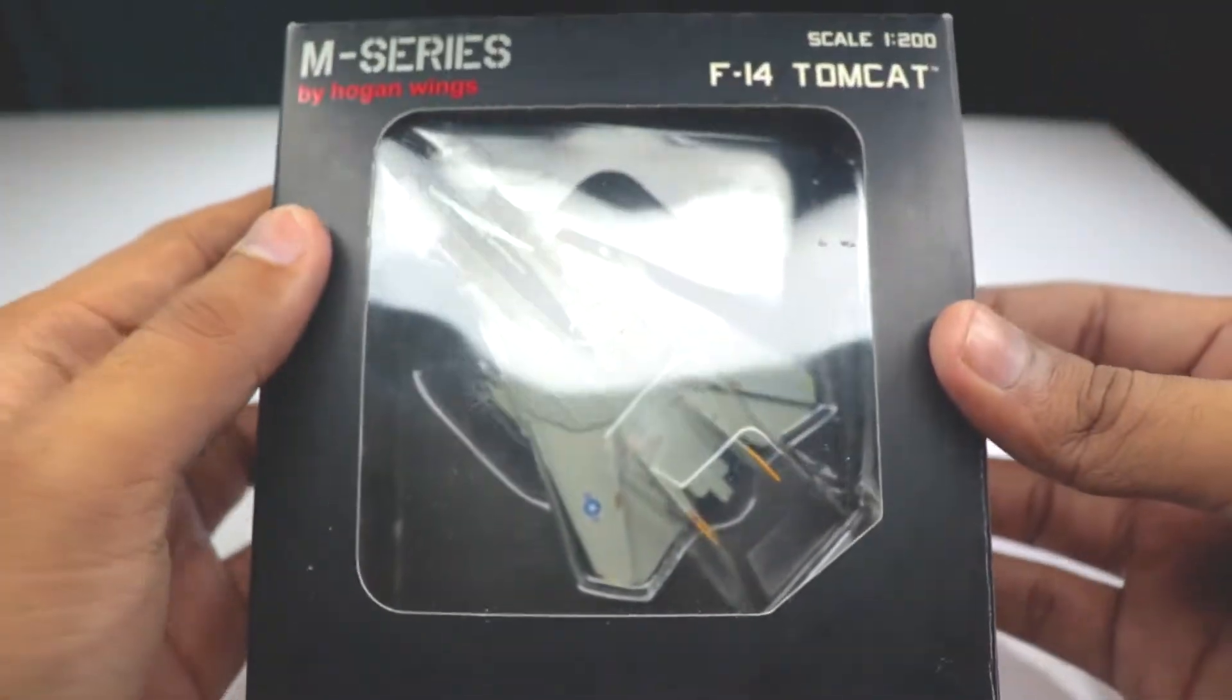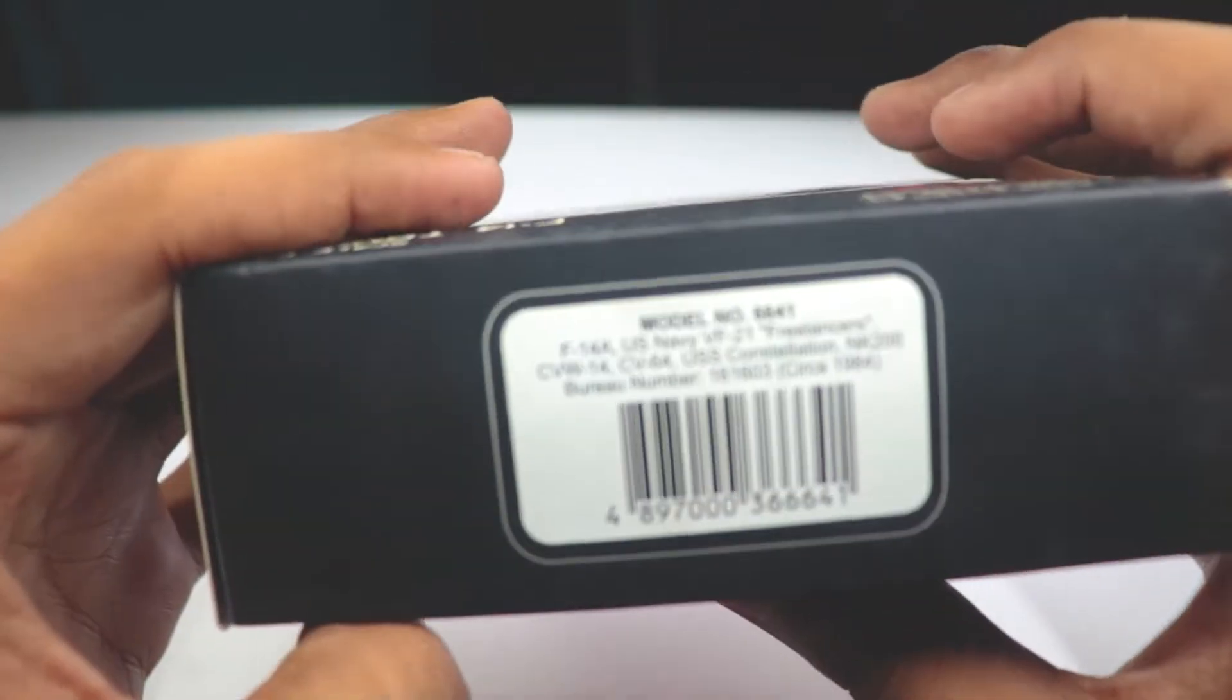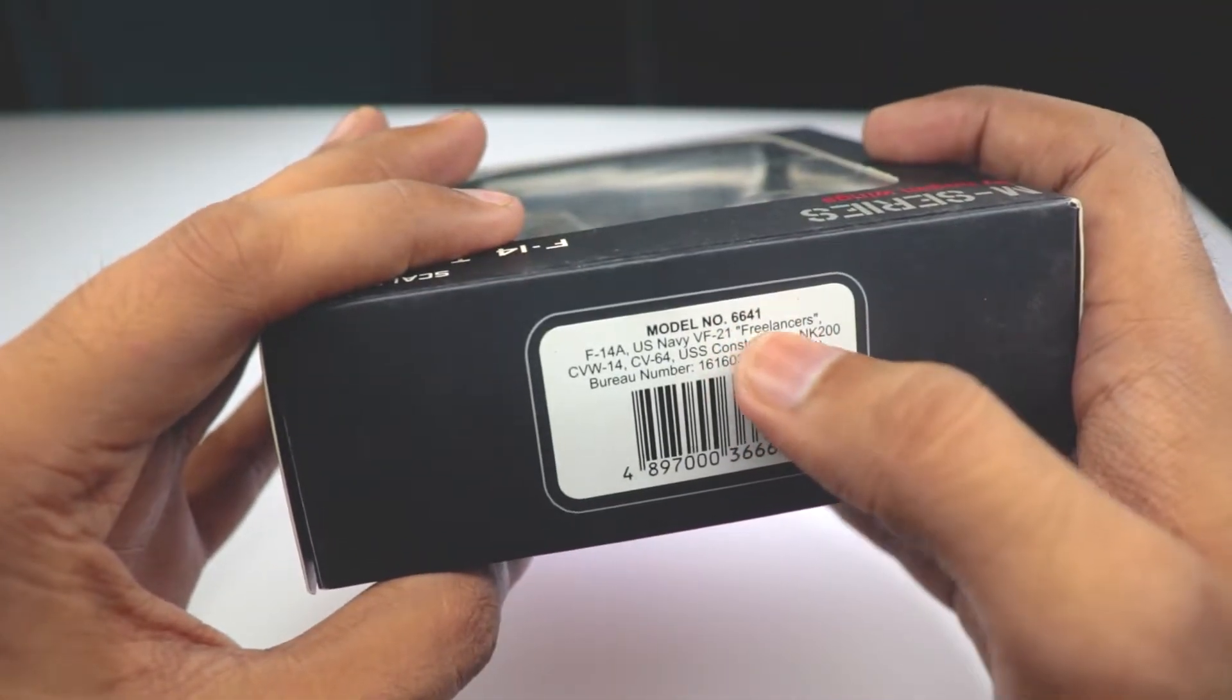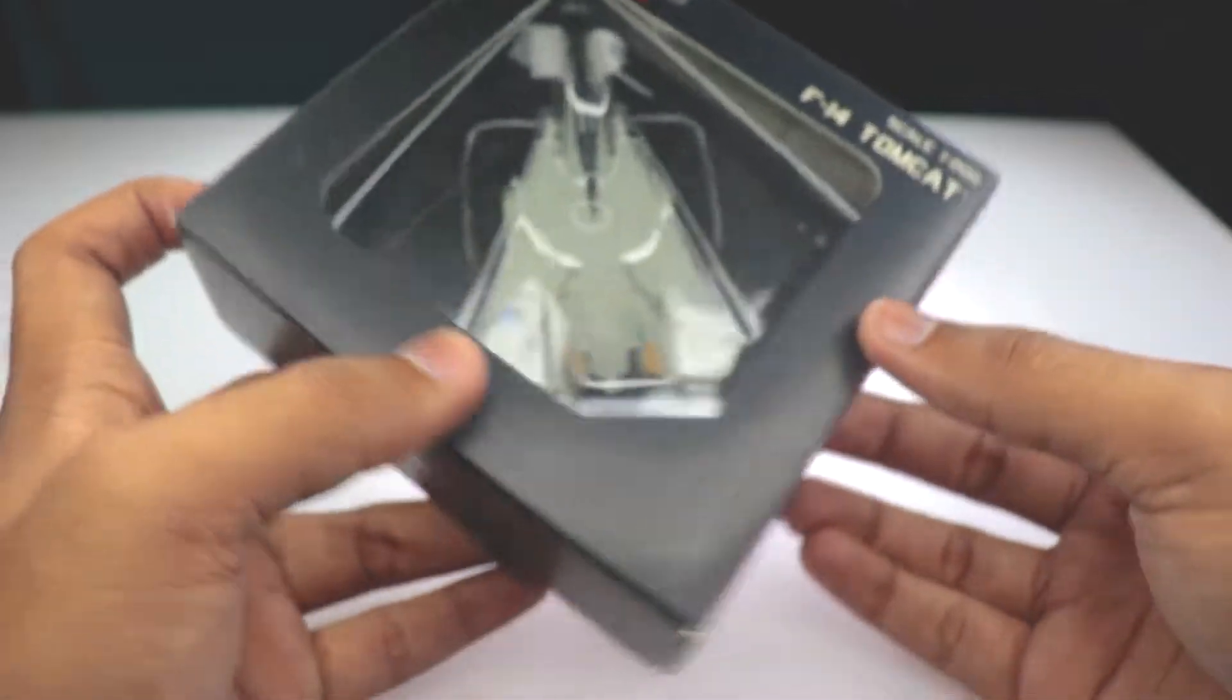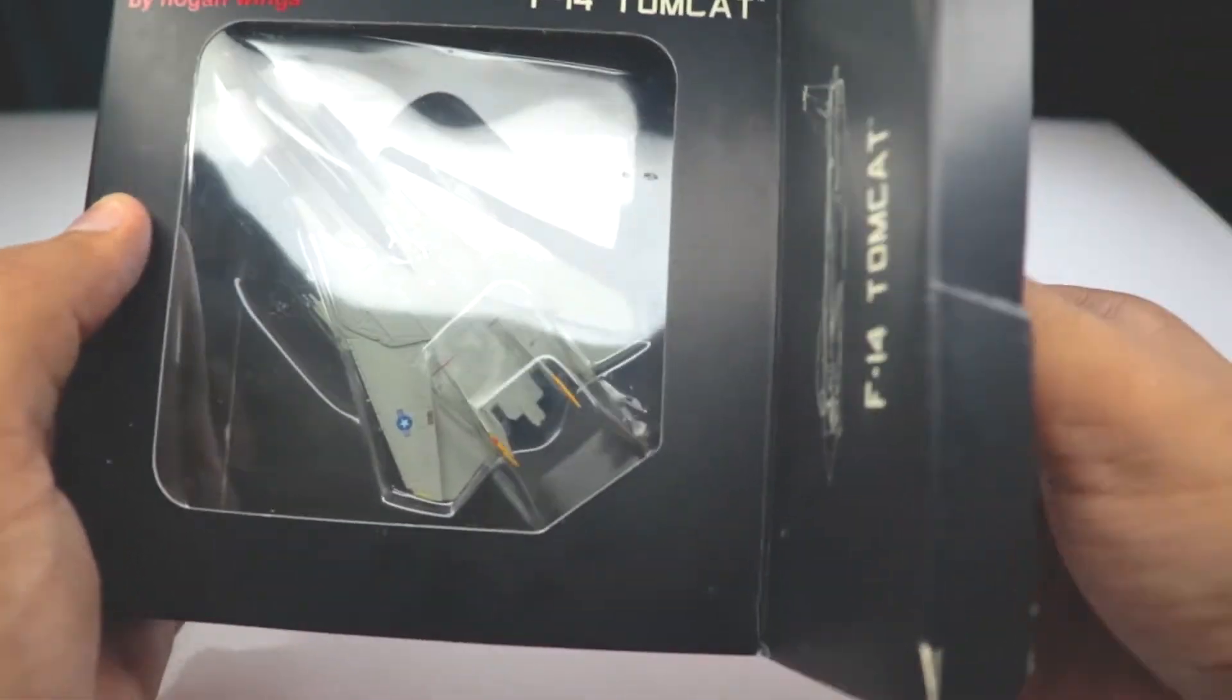Let's just see what this actually is and if you are looking to buy this, the exact model number is 6641. So just google Hogan Wings 6641 and you will be able to find this particular model.